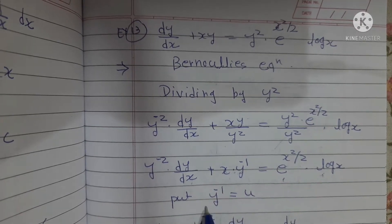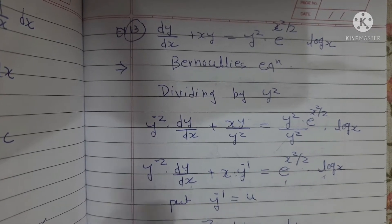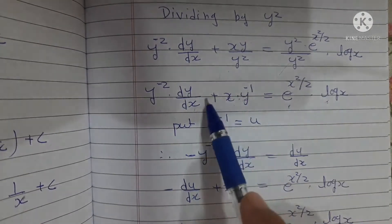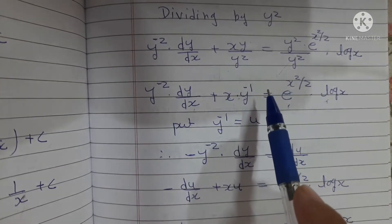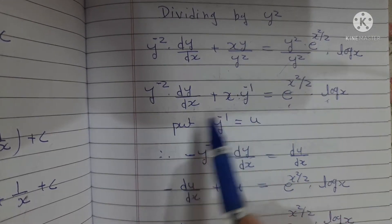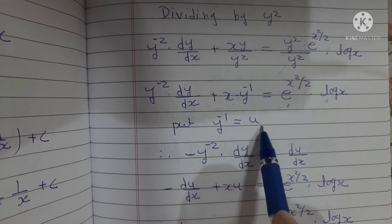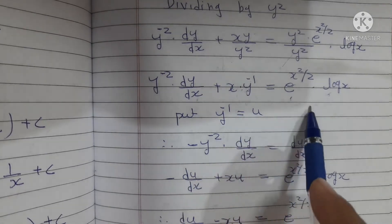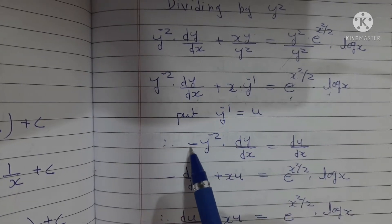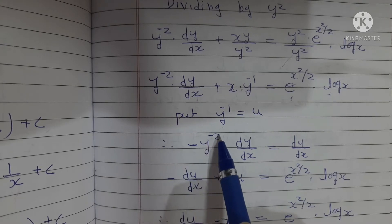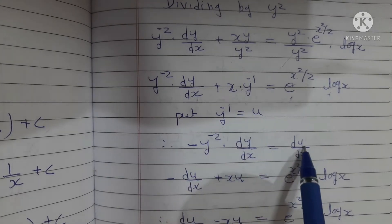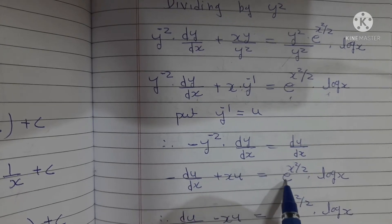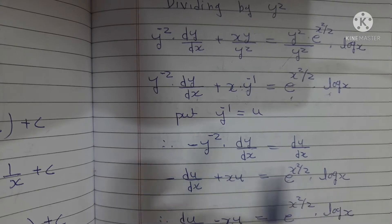Put y^(-1) = u. This is the standard procedure for Bernoulli's equation to reduce it to linear form. Differentiating: -y^(-2) · dy/dx = du/dx. Substituting back, we get: -du/dx + x · u = e^(x²/2) · log(x).